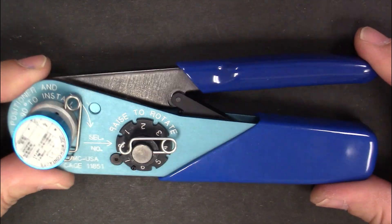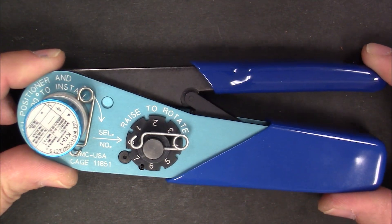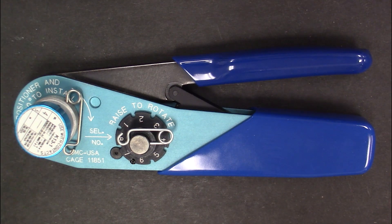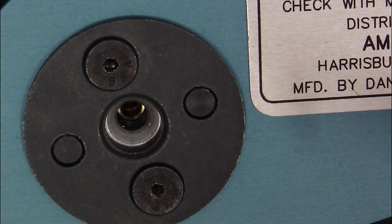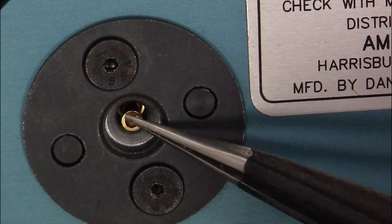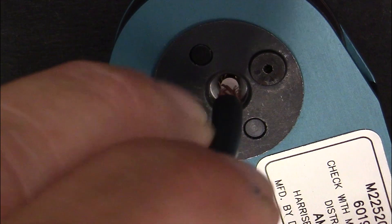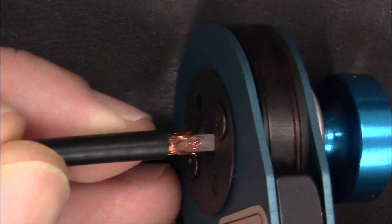The second method involves using a military specification tool. It will place eight crimps on the center pin. Place the male contact into the crimping tool, then place the center conductor into the male contact. While pressing the cable into the crimper, squeeze the crimper to attach the male contact.